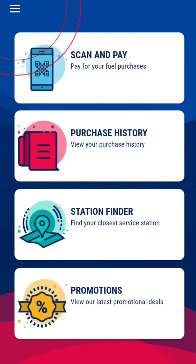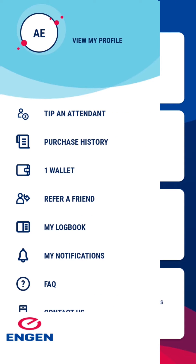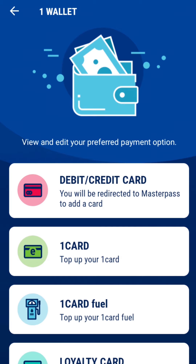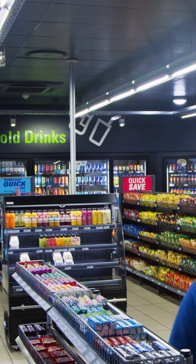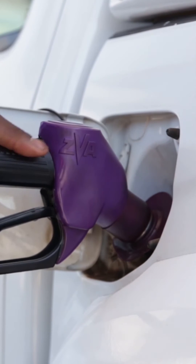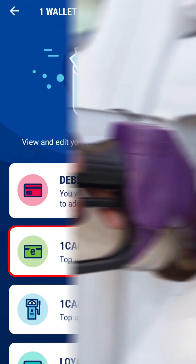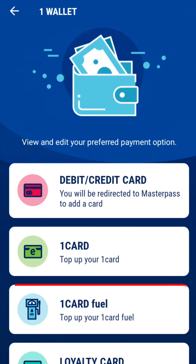Next, tap the One Wallet option. Here you have two options: option one, you can top up your One Card which is for shop items and fuel purchases, or option two, top up your One Card Fuel which is restricted to fuel.